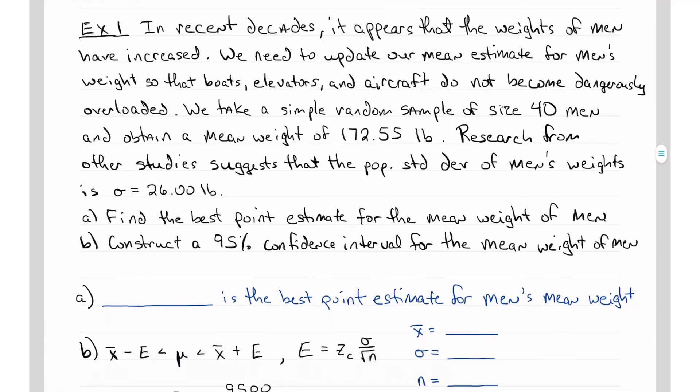So this problem says, in recent decades, it appears that the weights of men have increased. And I believe the problem says dramatically. So we need to update our mean estimate for men's weight so that boats and elevators and aircraft do not become dangerously overloaded. If you've ever been on an elevator, it will say maximum capacity. That is based on the weights, the mean weight or average weight of men.